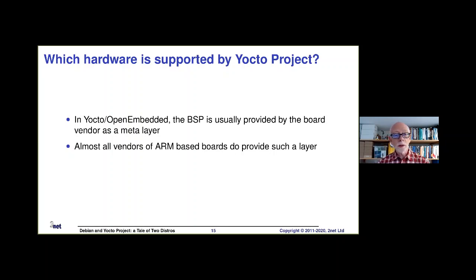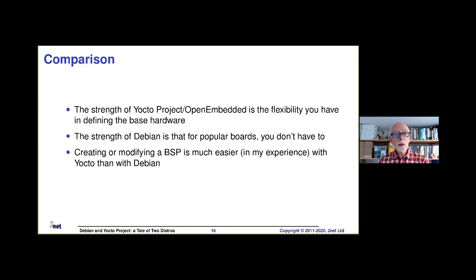Flipping round to Yocto — how does it look here? It looks pretty good. In fact, Yocto has better board support than Debian in this respect, because pretty much anybody who makes an embedded board, particularly ARM-based, will have a board support package for that board. Within Yocto the board support package is normally provided as what we call a meta layer. If you have boards not supported upstream, you can create a board support package using Yocto project, and in my experience that's much easier to do than it is for Debian. On the other hand, Debian is really great if it happens to support one of the boards you are choosing.